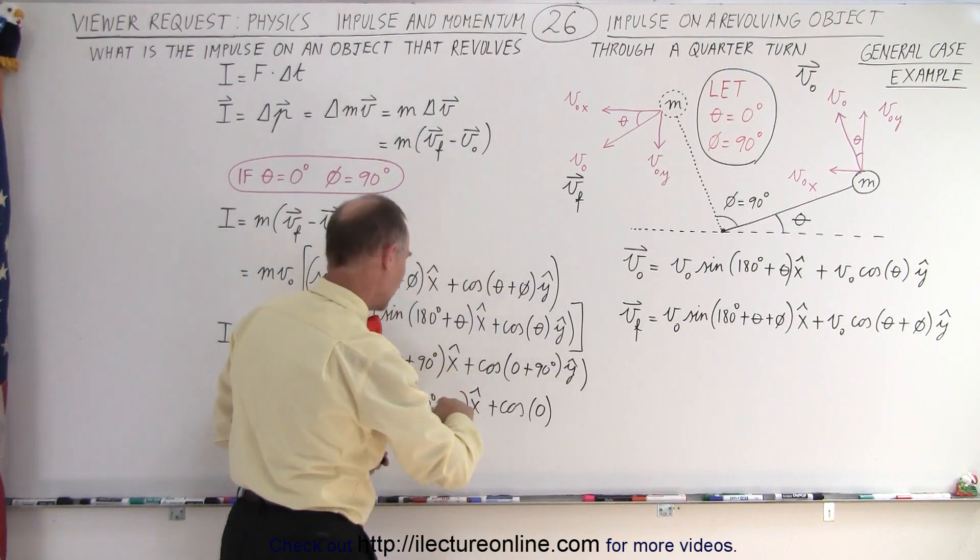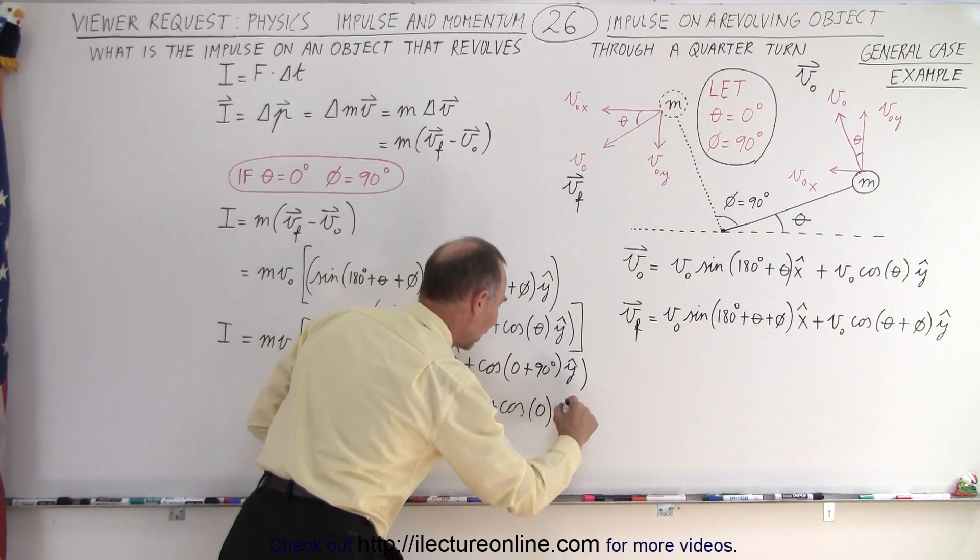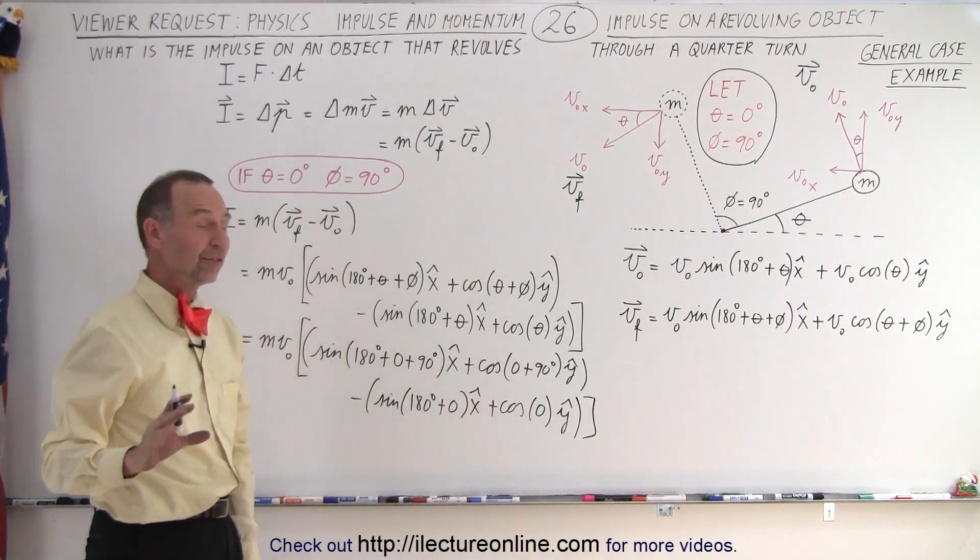because we start from a 0 position. And that would be cosine of 0 degrees, and that's in the y direction, like that. Now all we have to do is simplify it.